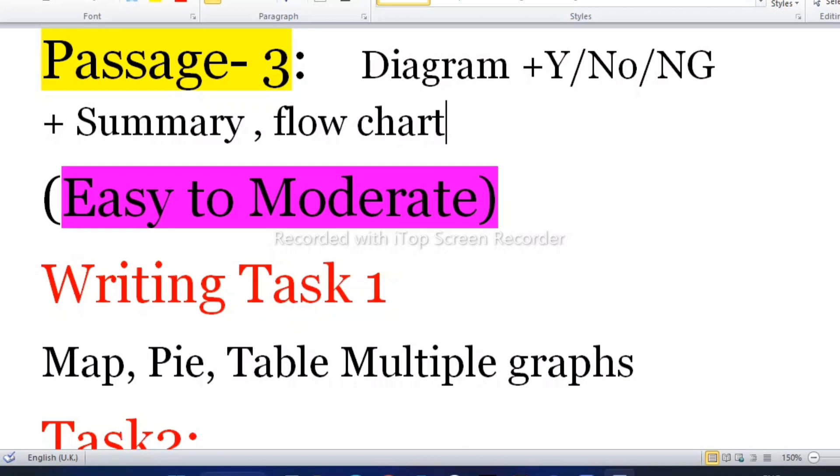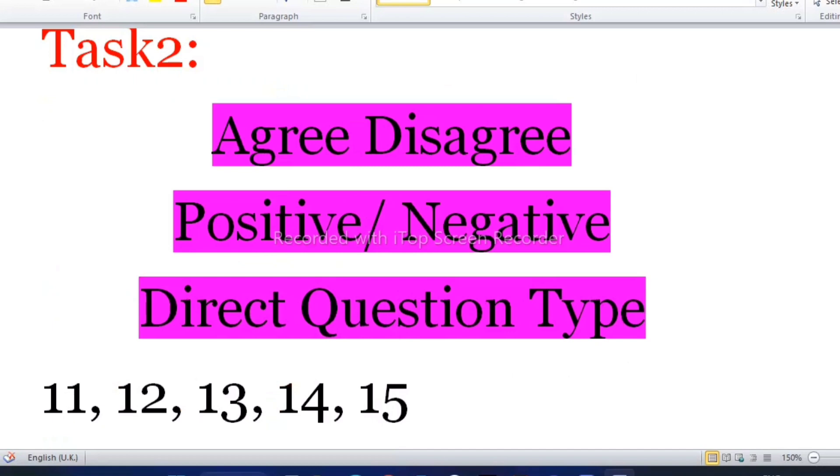Then you can get band 7 easily. In Writing Task 2: agree/disagree, positive or negative, direct question type topics. The topics you can prepare from the books 11, 12, 13, 14, and 15 from your Cambridge IELTS books.